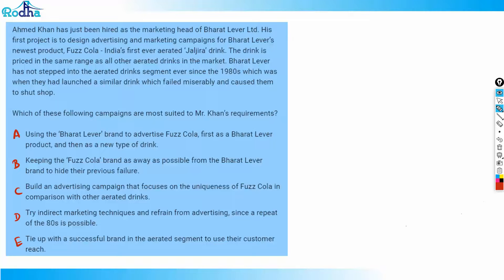Option A says: use the Bharat Liver brand to advertise First Cola — first as a Bharat Liver product, then as a new type of drink. The problem here is that people will remember that 1980s failure, and they may already be wary of the Bharat Liver brand because it completely failed earlier. So directly using that brand to advertise First Cola is not good for the campaign. We can eliminate option A — people remember the 1980s fiasco.